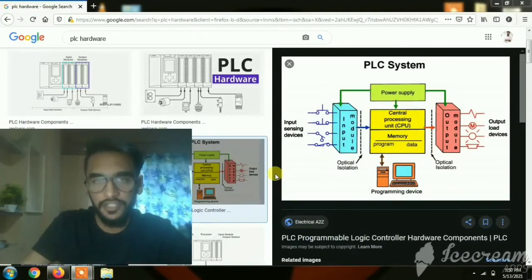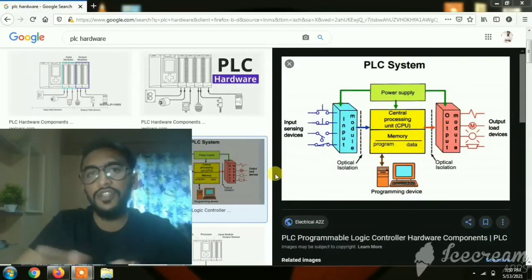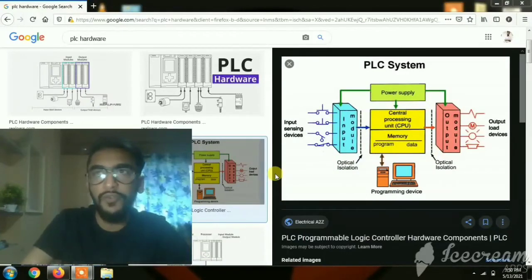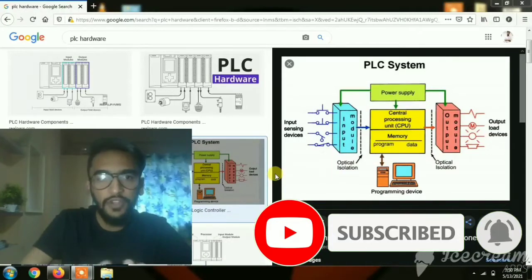PLC has relay channels - normally open and normally closed. There are different variants of 4 channel relay, 12 channel relay, and 6 channel relay based on the industry requirements. PLC also operates on 24 volt and 12 volt DC, or 230 volt and 110 volt AC. It varies according to the power supply.